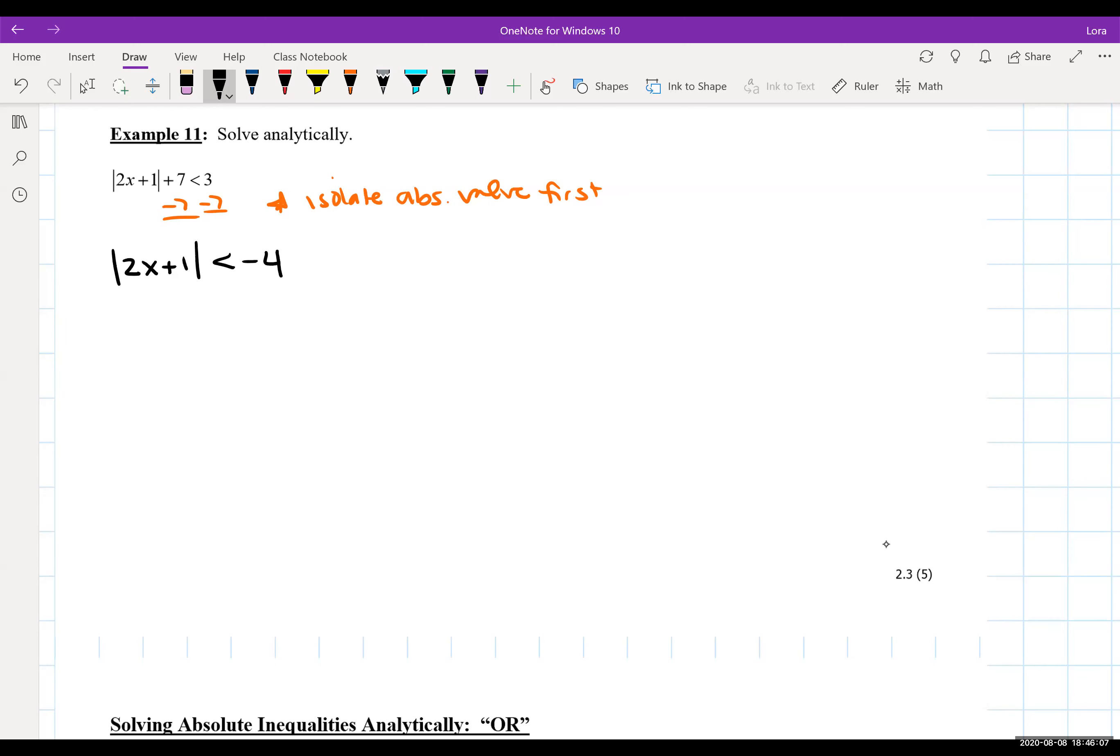Now I always pause after this step and I ask myself, what type of number is this constant? And I notice that I have a negative number here. So anytime you have a negative number after you've isolated the absolute values or you have zero, you kind of run into some special cases that you have to deal with.